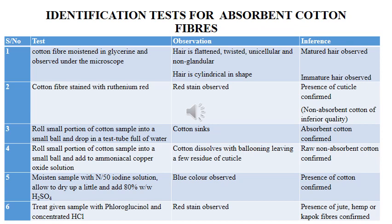Another identification test is staining the cotton fiber with ruthenium red. If the fiber takes up the red stain, the presence of cuticle is confirmed, indicating a non-absorbent cotton of inferior quality. Once that color is observed, it tells us that the cuticle is present and the cotton is of inferior quality.